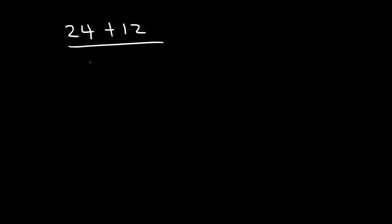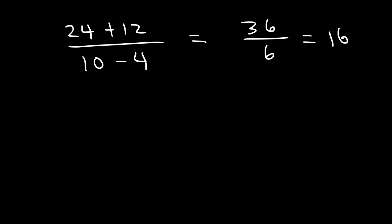Try this example. What's 24 plus 12 divided by 10 minus 4? Go ahead and simplify that expression. 24 plus 12 is 36, 10 minus 4 is 6, and 36 divided by 6 is 6. And that's all you've got to do for that one.